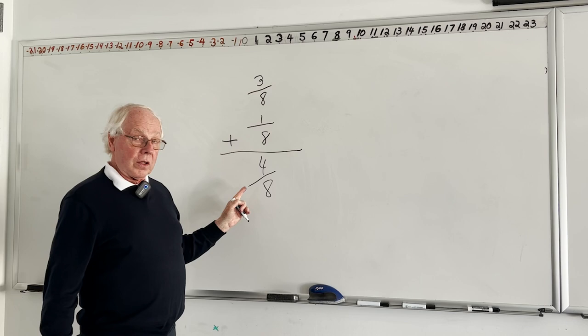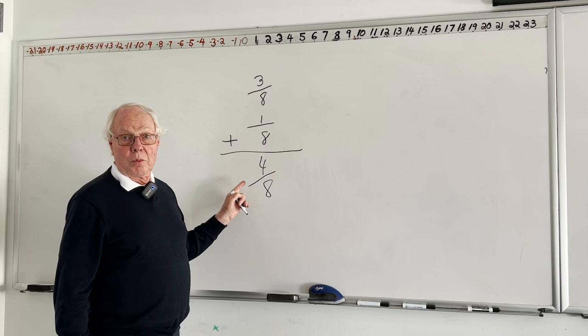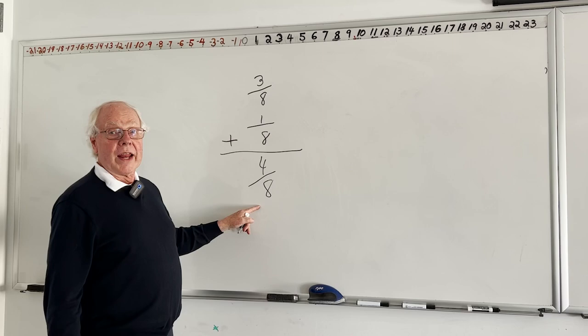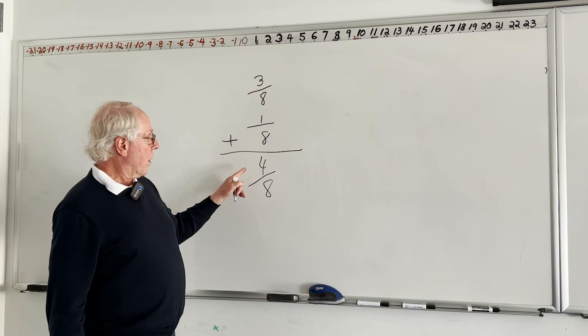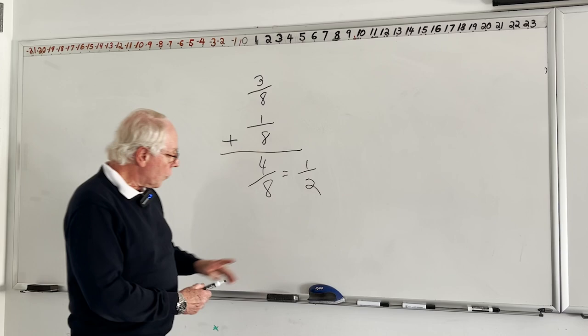The only trick is — and we talked about this in the last lesson — on many tests they will insist that fractions be reduced to lowest terms. So there's another name for four-eighths that has the exact same value. You can see that four goes into both four and eight: four goes into four once, four goes into eight twice, so the answer is one-half. That's probably the answer they're going to insist on. So that one's easy.